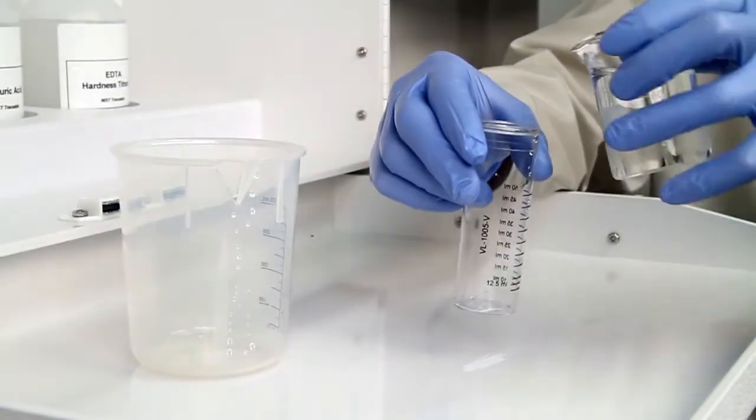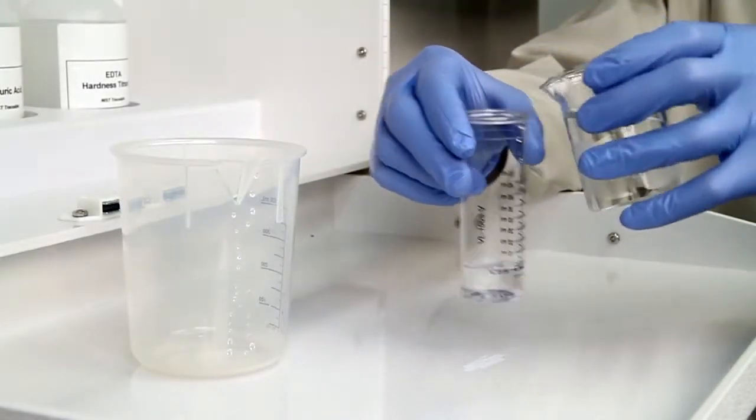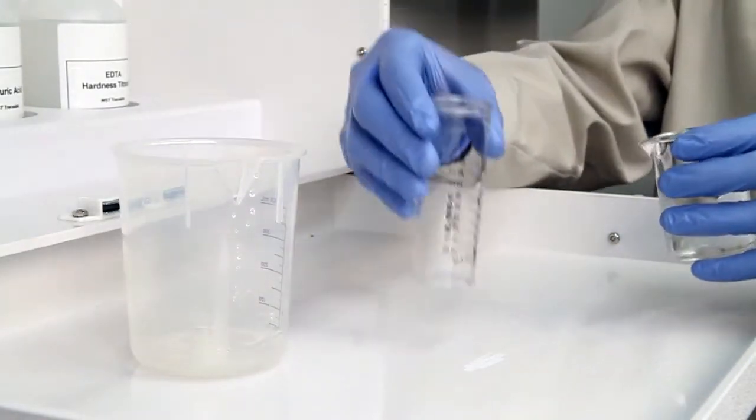The first step according to the Endpoint ID procedure is to collect an accurate sample. The smallest change in sample size will lead to inaccurate results.